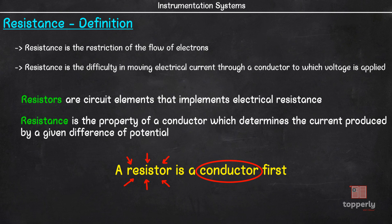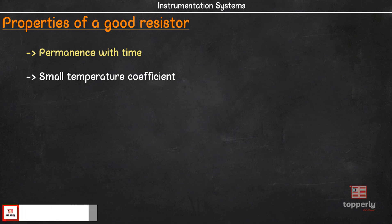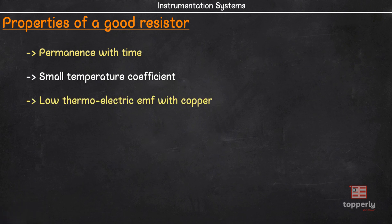Since resistors are extensively used in electric and electronic fields, it is important to make high quality resistors. There are several qualities or properties which are ideally needed for a good resistor. They are stability or permanence with time. This means that the value of resistance should not vary with time. Next property is that small temperature coefficient. This is needed because the value of resistance should not vary much with changes in temperature. Then we have low thermoelectric emf with copper.